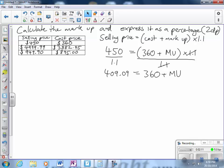Now to get the markup by itself I need to subtract $360 from both sides. If I do that the $360 on the right will go away and over here I have $409.09. Take $360 equals the markup. So the markup will be equal to $49.09.